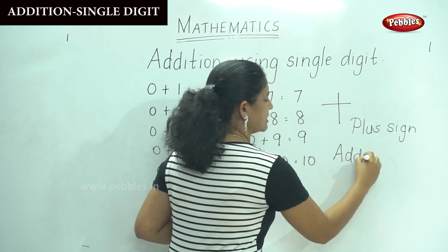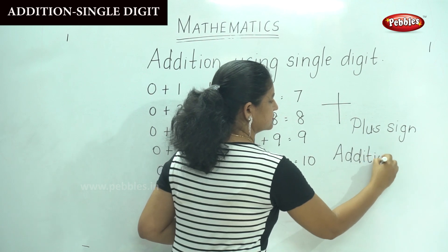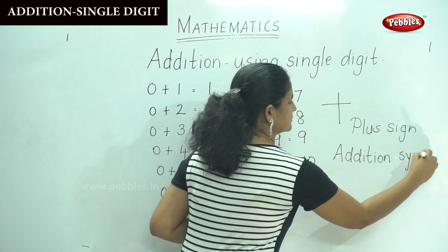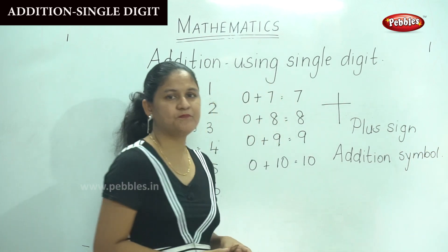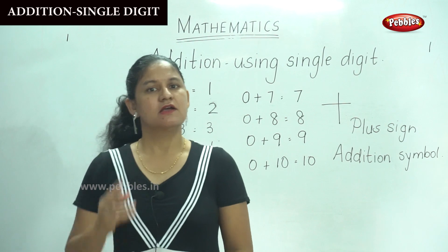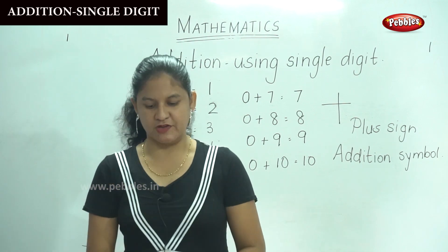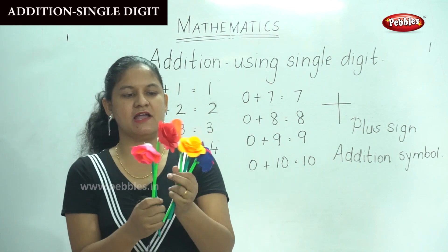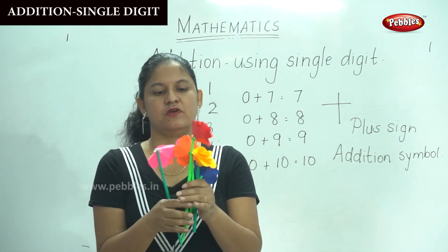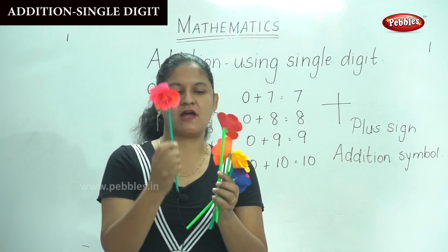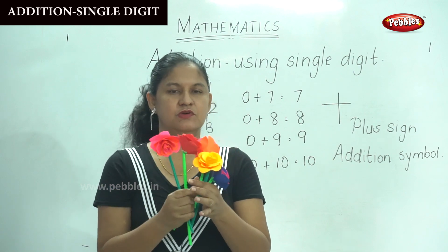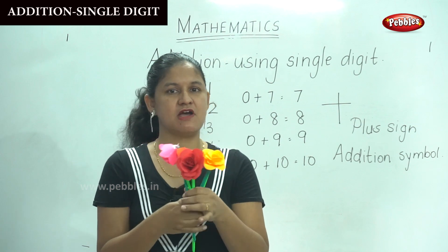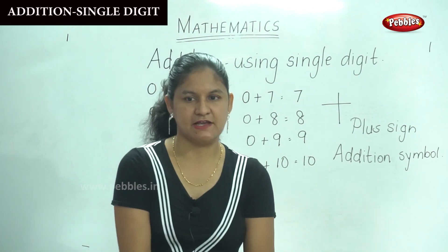This is the symbol for addition. So addition is nothing but counting 2 or 3 things. So I have these flowers in my hand — shall we count how many flowers? 1, 2, 3, 4, and 5 flowers in my hand.